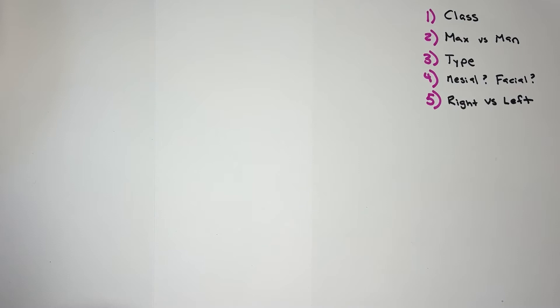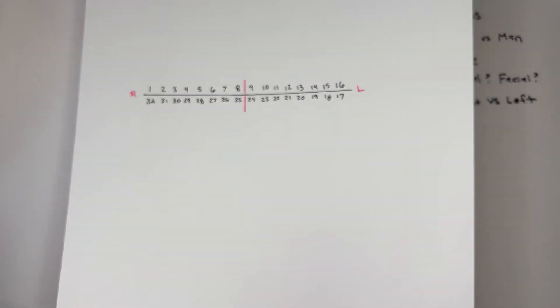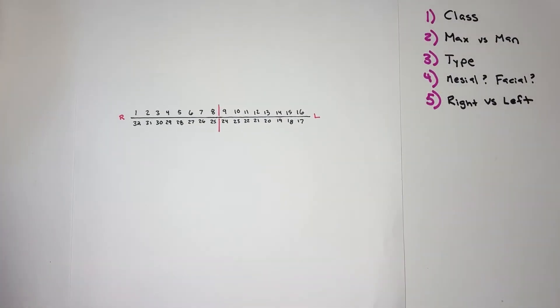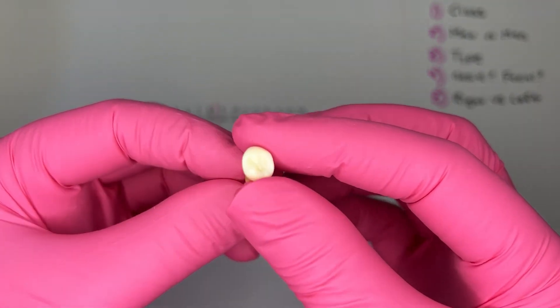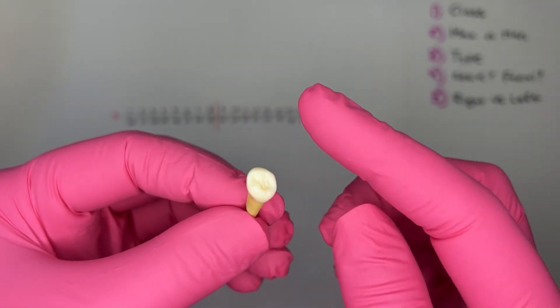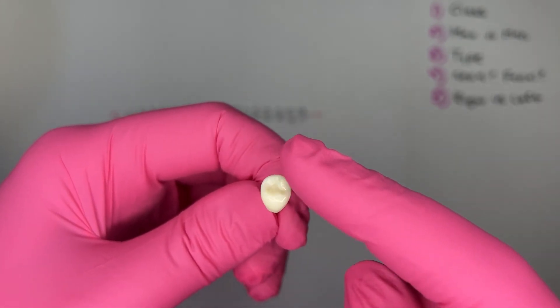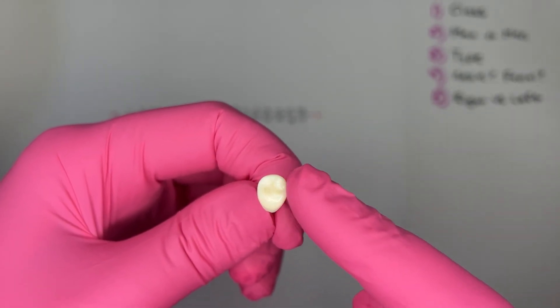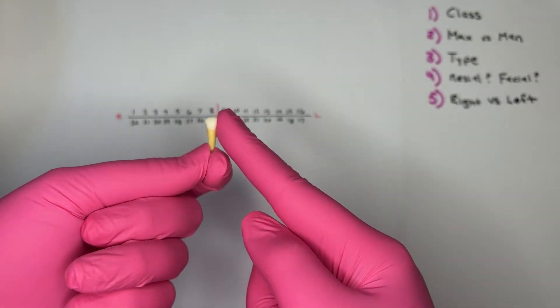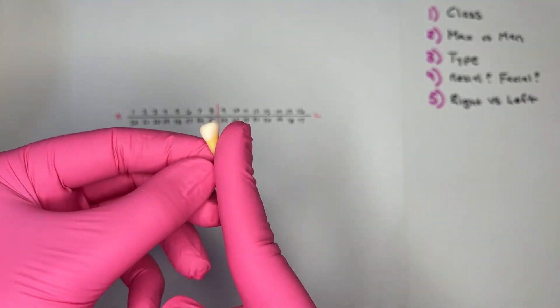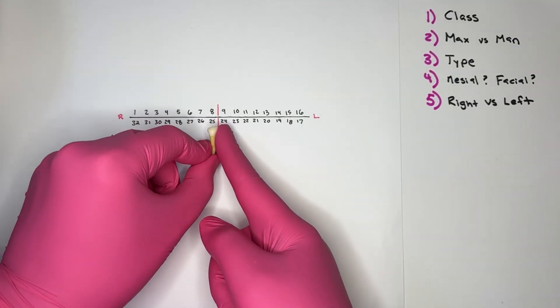Right versus left. I'm going to be using an imaginary mouth or a written scratch sheet paper mouth. I'm going to have the facial facing me. I'm going to hold the side that has that larger lingual cusp, which is the mesial. I'm going to take that midline, and I'm going to take that mesial to the midline of the imaginary mouth.